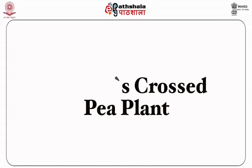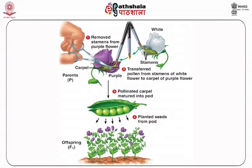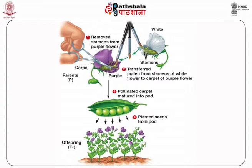Mendel's crossed pea plant — the diagrammatic representation of Mendel's experiment. At first, he removed the stamens of the pea plant bearing purple flowers. Then he removed the pollen from stamens of the white flower to the egg-bearing carpel of the purple flower. The carpel then matured into a pod. He planted the seeds from the pod and observed that in the first generation all the offspring were of purple color.